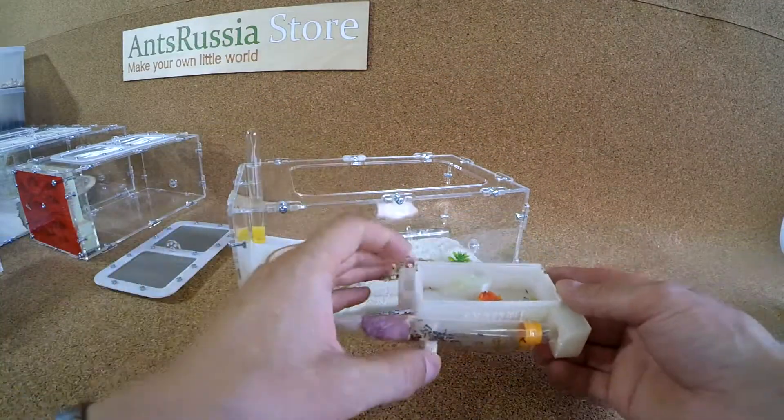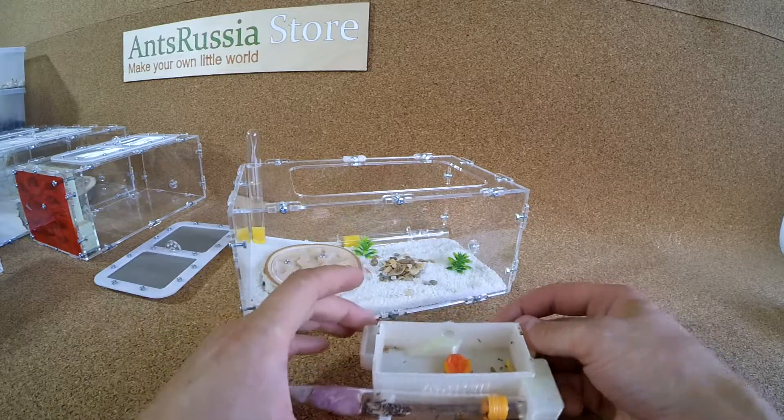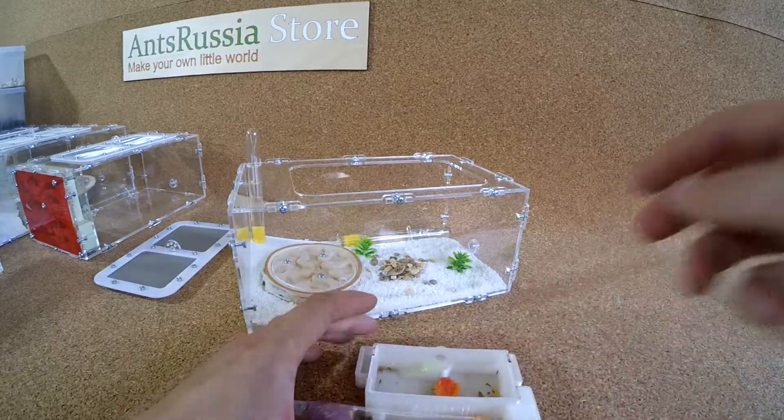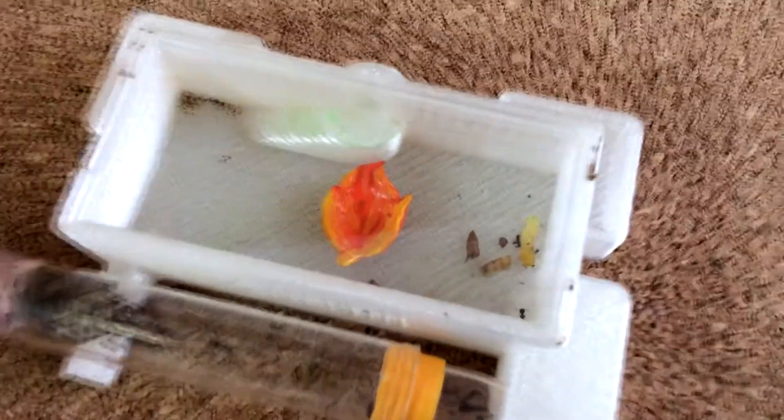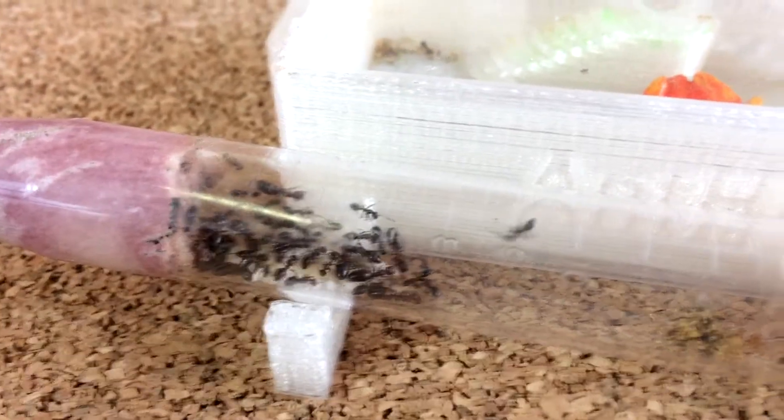And here they are! Up to this day those ants have been living in the incubator module nest. And as you can see the water behind the cotton has finished and the cotton has grown moldy. And therefore resettlement for this colony is very necessary at the moment.